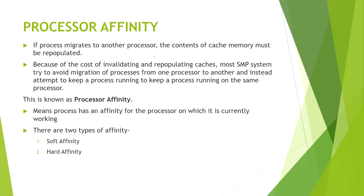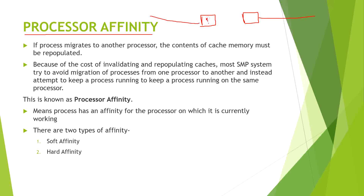Now we will discuss processor affinity. In a multi-processor scheme, if there are multiple processors with different queues, and one process is already being executed by a particular processor — which also has its own cache memory, say C1 and C2 — then after the completion of execution, if that same process requests execution again and is assigned to a different processor, the cache built for that process is wasted due to migration.